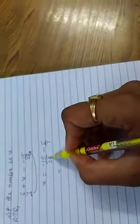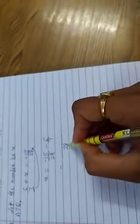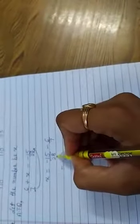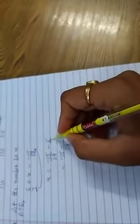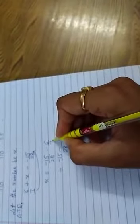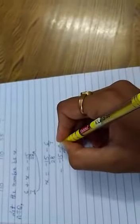Now solve this. LCM of 28 and 7 will be 28. 28 divided by 28 will be 1, 1 multiply minus 15 will be minus 15. 28 divided by 7 will be 4, 4 multiply 6 minus 24.